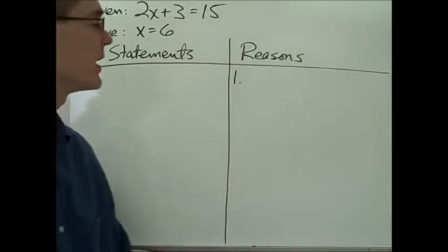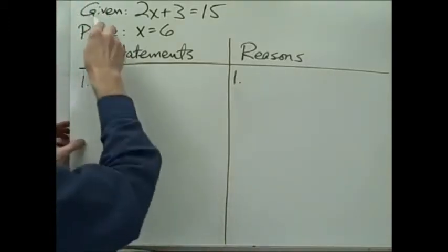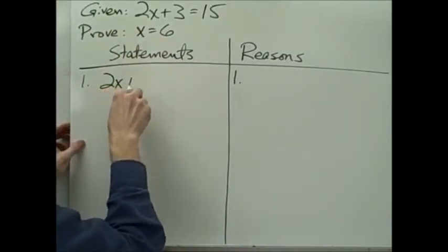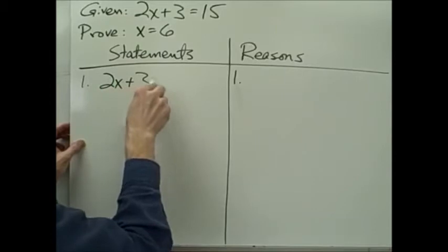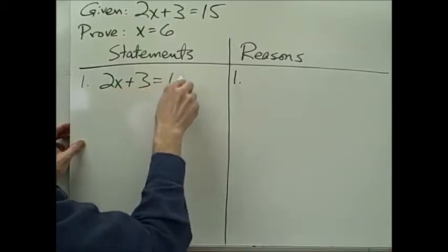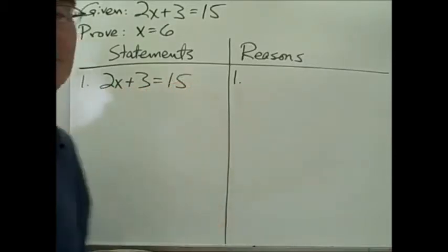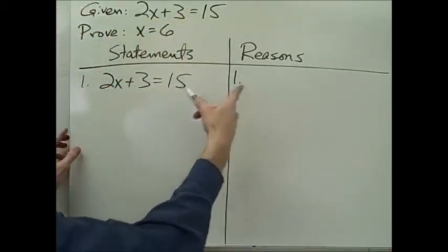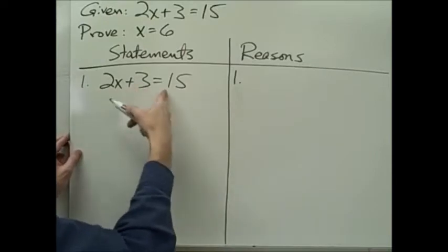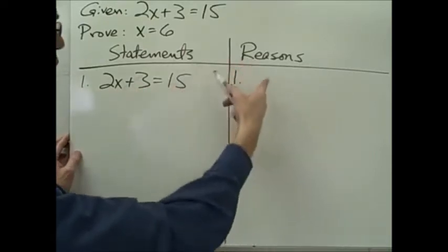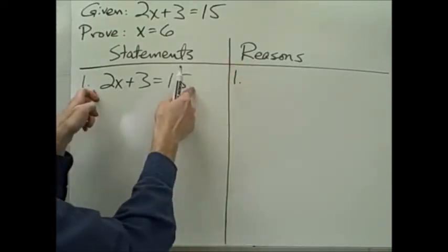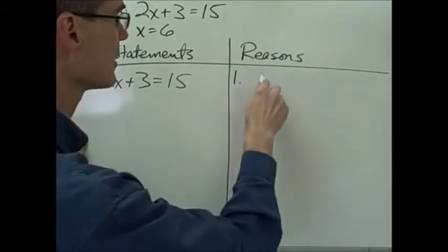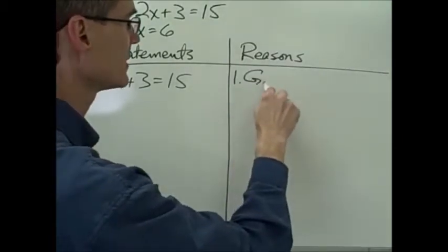We start with step number one, and step number one is always the given part of your proof. Sometimes you have more than one given statement — in this case we just have one. So we write: 2x plus 3 equals 15. And the reason we have that statement is because it's given.